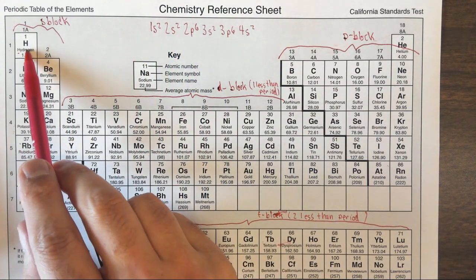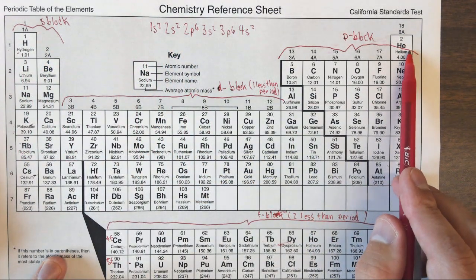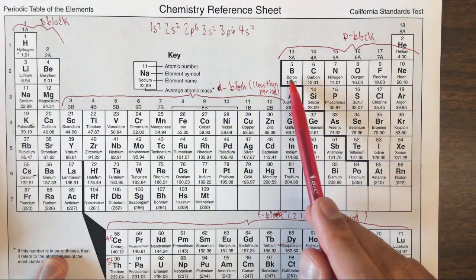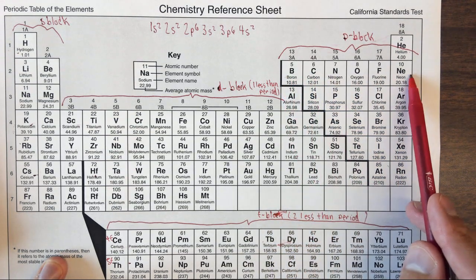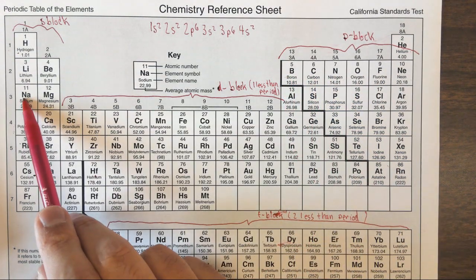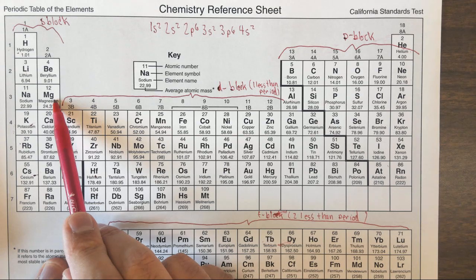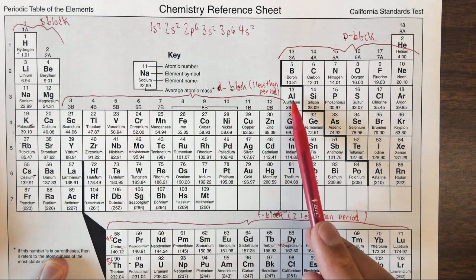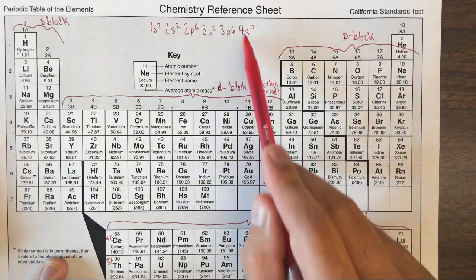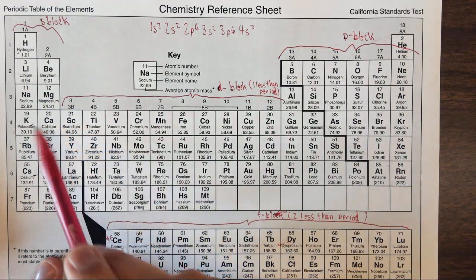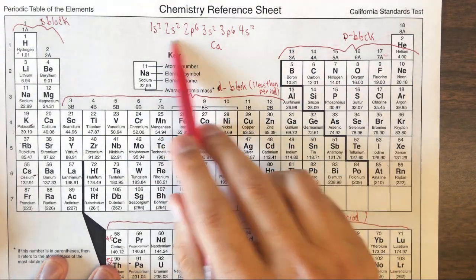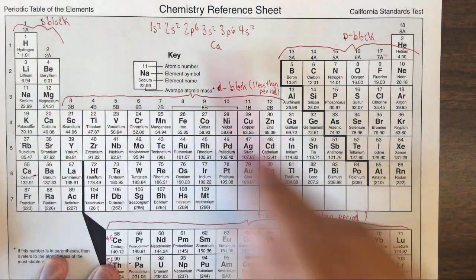Let's go through. So 1s2, that's hydrogen and helium. 2s2, lithium and beryllium. 2p6, boron through neon. Keep going. 3s2, sodium and magnesium. 3p6, aluminum through argon. 4s2, and we arrive at calcium. So this is the electron configuration for calcium.